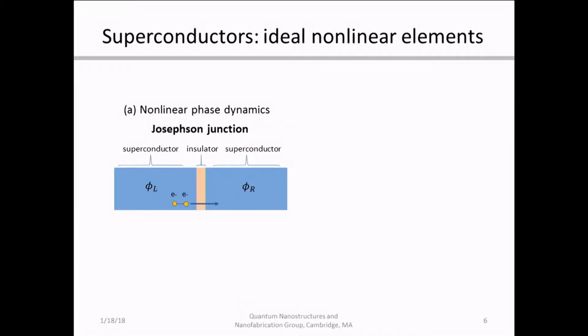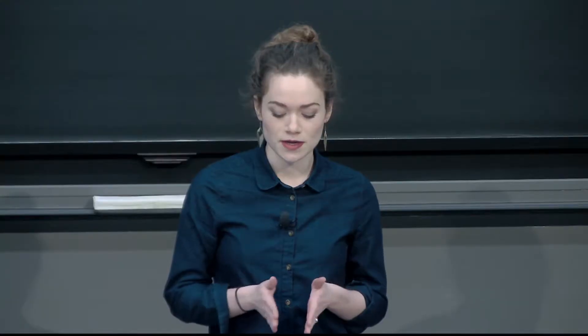Superconductors can be considered ideal nonlinear elements, and you can view that in two different ways. The first is through the nonlinearity of the phase dynamics themselves — specifically, the phase of the superconducting electrons. Perhaps the most common superconducting device is the Josephson junction, shown here, and it's comprised simply of two superconductors sandwiching a thin insulating barrier.